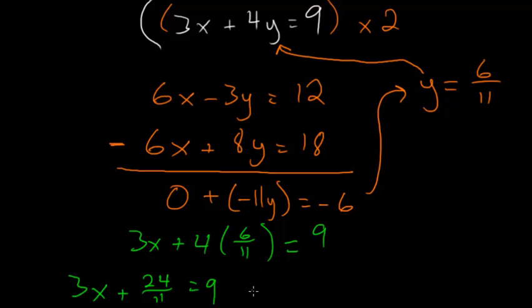And then subtracting 24 over 11 on each side of the equation, we have 3x is equal to 9 minus 24 elevenths. And then we need a common denominator.